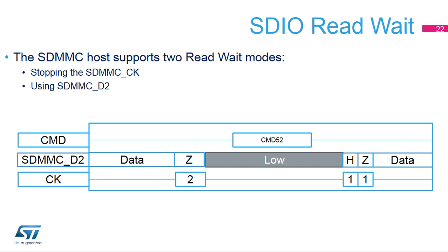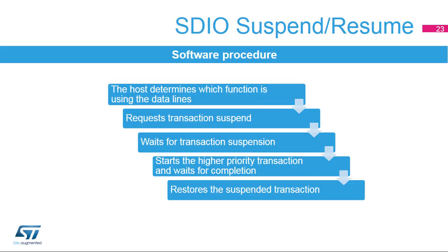The read-wait state operation is an SDIO-specific operation that allows the host to temporarily stall the data transfer while emptying its data buffer or sending commands to other functions of the SDIO device. The SDMMC controller supports two read-wait modes: either by stopping the SDMMC-CK or using the SDMMC-D2 signaling. The advantage of SDMMC-D2 signaling is that you are still able to communicate with the card while in read-wait mode. With multi-function cards, there are multiple devices that share access to the SD bus. When the function supports suspend and resume, the host can temporarily halt data transfers to perform other internal operations or communicate with other functions and then resume the suspended transaction.